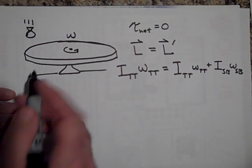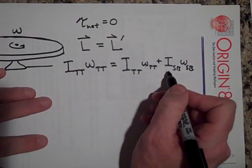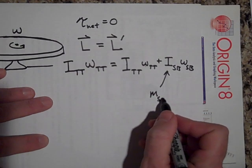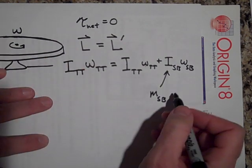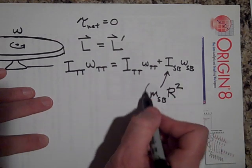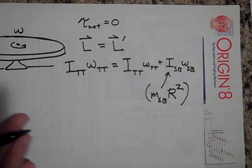What will be the I of the sandbag? The I of the sandbag right here, this one, will be the mass of the sandbag times how far it is from the axis squared. That's what the I is.